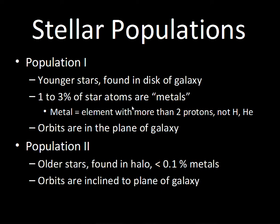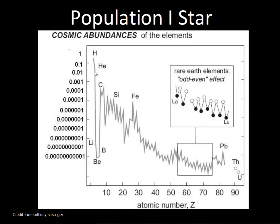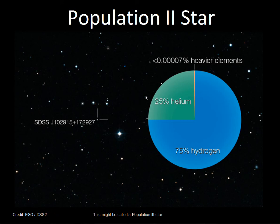Here's a chart of element abundance for a Population I star. Iron is marked, and elements more massive than iron continue on a logarithmic scale — each position is ten times less abundant as you go down. Hydrogen and helium are dominant for all stars, but Population I stars have a good one to three percent mixture of heavier elements. Population II stars are almost all hydrogen and helium and can be identified from their spectra — they are missing the absorption lines due to carbon, oxygen, nitrogen, or iron.